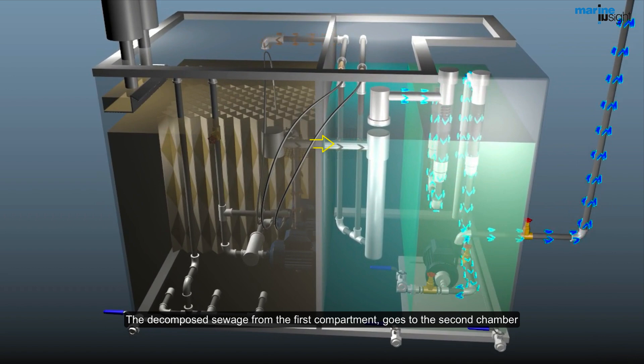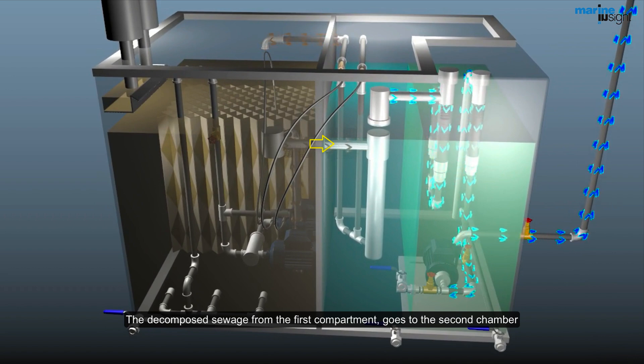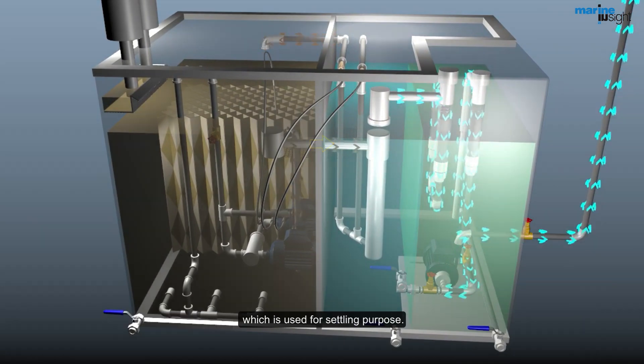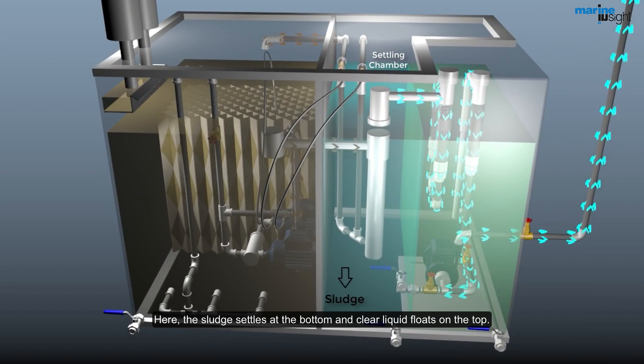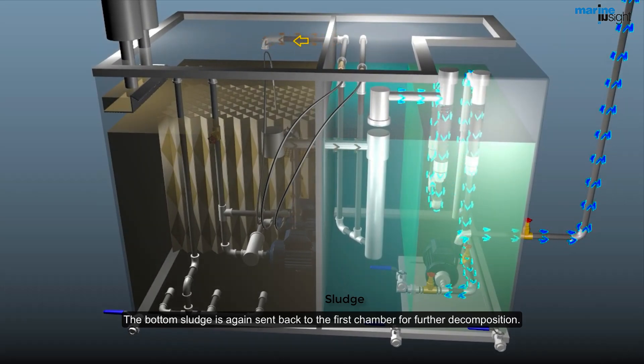The decomposed sewage from the first compartment goes to the second chamber, which is used for settling purpose. Here, the sludge settles at the bottom and clear liquid floats on the top. The bottom sludge is again sent back to the first chamber for further decomposition.